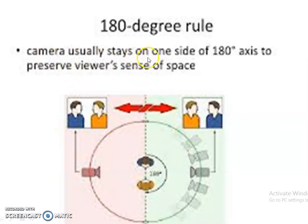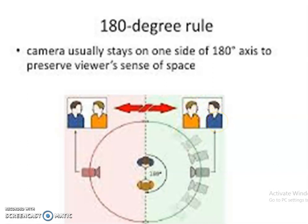The camera usually stays on one side of the 180 degree axis to preserve the viewer's sense of space. The blue shirt character is on the left hand side and the yellow shirt character is on the right hand side. When this line is crossed, the yellow shirt comes to the left hand side and blue to the right hand side. This will actually disorient the viewers — the two subjects have reversed their positions in the frame. So to avoid this confusion, it is always advisable to place the camera within the 180 degree axis.